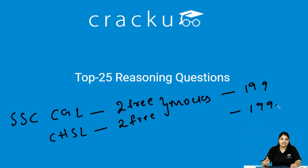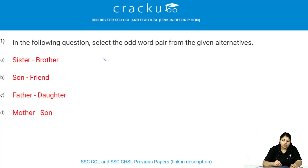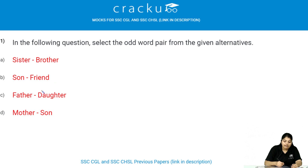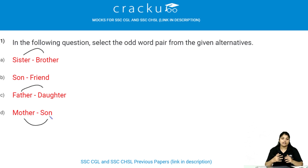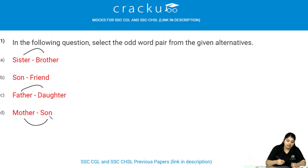Let us see the first question now. In the following question, select the odd word pair from the given alternatives. The options are: sister-brother, son-friend, father-daughter, and mother-son. Every option here is a blood-related pair — sister-brother, father-daughter, mother-son — but son and friend is not a blood relation. Therefore, the odd word pair is son and friend.